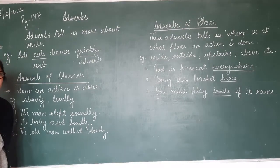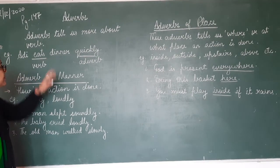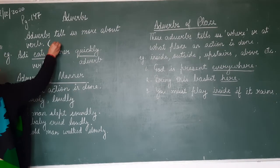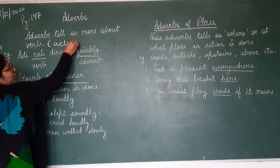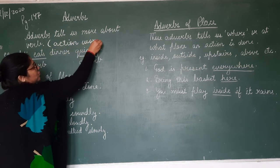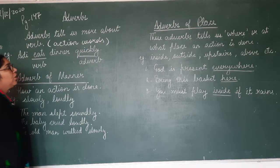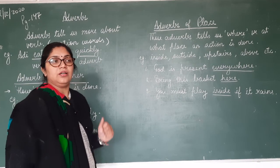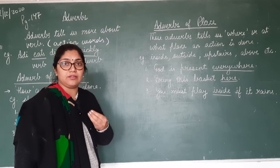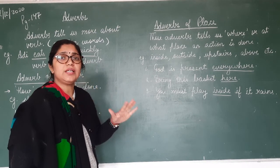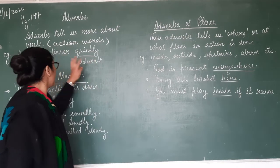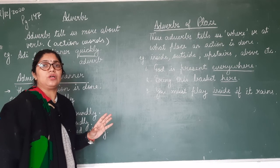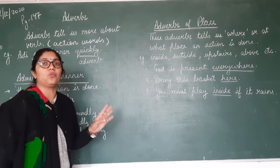So what are adverbs? Adverbs tell us more about the verb. Now what is a verb? A verb is the action word — the action words you use to do. For example: teaching, running, speaking, eating, drinking. So these are the words which are called verbs — whatever action you do. Jo bhi aap kaam karte ho, jo bhi action aap karte ho, that is called a verb.